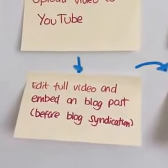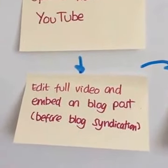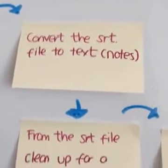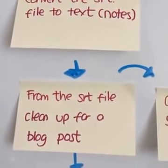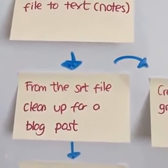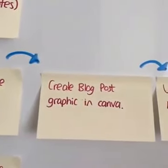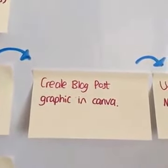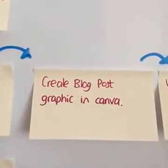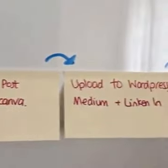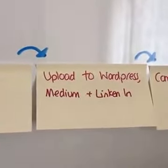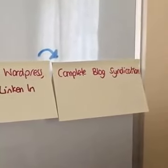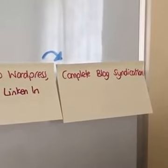Using that same SRT file, you convert it to text. You edit the full video and embed it as a blog post, using the SRT text as the basis which you can clean up for the blog post. You can also create a blog post graphic in Canva, then upload it to WordPress, Medium, and LinkedIn to complete the blog syndication — basically putting it everywhere to get it out there.